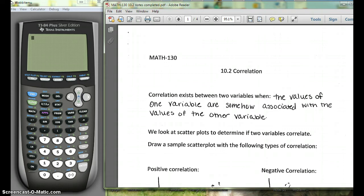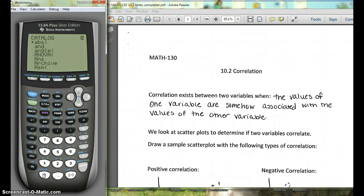Now the first thing you need to do to make the R value work, and if you're ever having trouble you'll want to try this, is hit second zero, go to catalog, and you want to scroll down until it says diagnostic on. So we're going to scroll down to the D's. Here we see it says diagnostic on, we're going to hit enter, we're going to hit enter again. Now you shouldn't have to do this again unless your calculator gets reset or something.